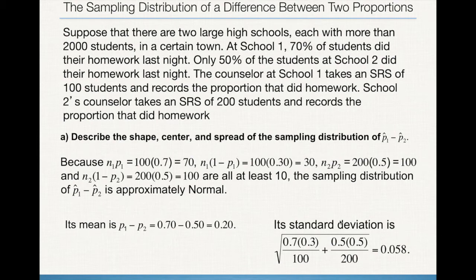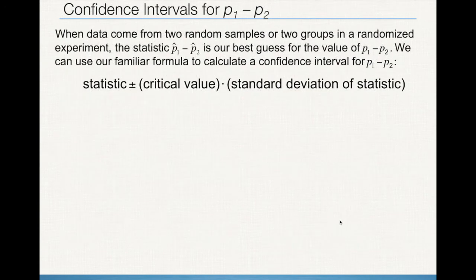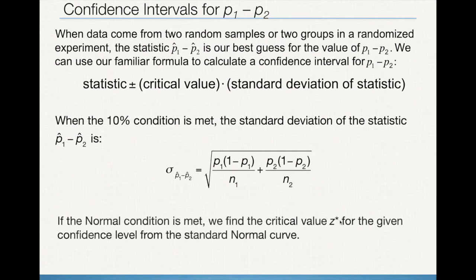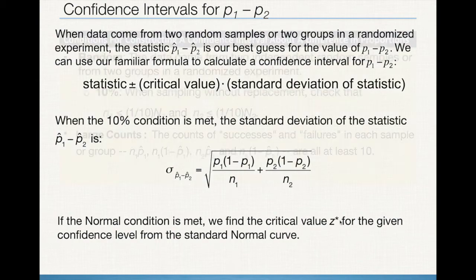Once we understand how to combine the two, the mathematics is really stuff we've already done before. If we want to create a confidence interval, remember the general equation for a confidence interval — we're just going to plug in the values we need. First we need the standard deviation, using the equation we've derived. As long as our conditions are met, our critical value is going to be a z-score, determined by what confidence level we're working with.